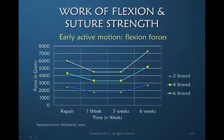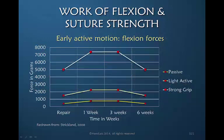In 2000, Strickland looked at suture strength as it relates to the force needed for various types of active motion. The differing blue lines show the point at which rupture occurs with a 2-strand, 4-strand, and 6-strand repair when force is applied. The force is measured in grams. The amount of force needed changes over time — any repair will be somewhat weaker at the 1 to 3 week range and then begins to strengthen as we move toward 6 weeks. The graph with yellow and white shows how many grams are needed for strong grip, light active motion, and passive motion.